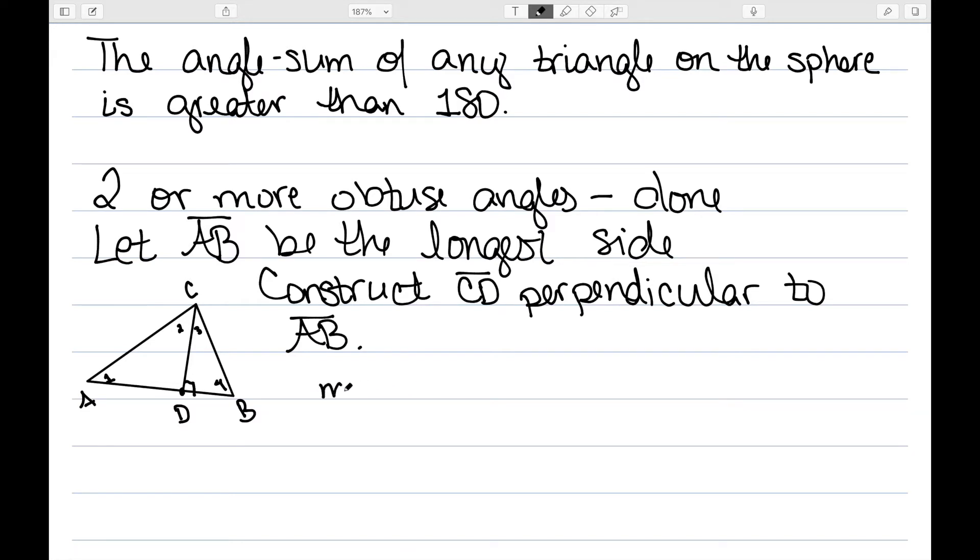I know that the measure of angle one plus the measure of angle two needs to be greater than 90 degrees. Since this is a right triangle, I already know right triangles sum to be greater than 180. And I know that this angle here is already 90. So the measure of angle one plus angle two needs to be greater than 90. Equivalently, the measure of angle three plus the measure of angle four needs to be greater than 90. Once again, this triangle here on the right is a right triangle. And I've already shown that right triangles sum to be bigger than 180.